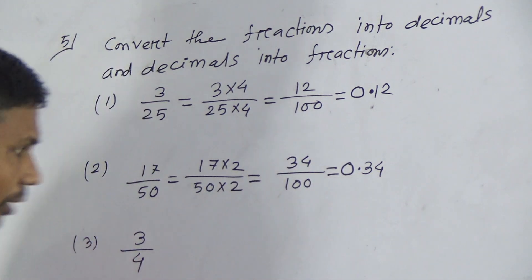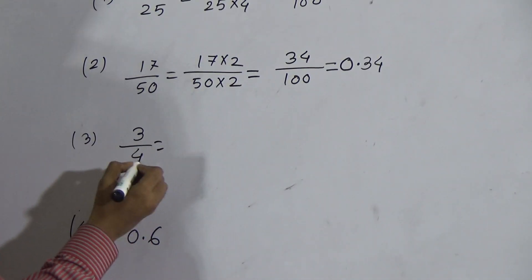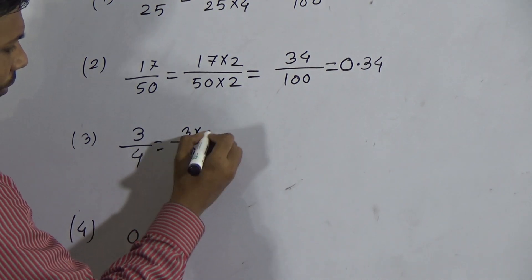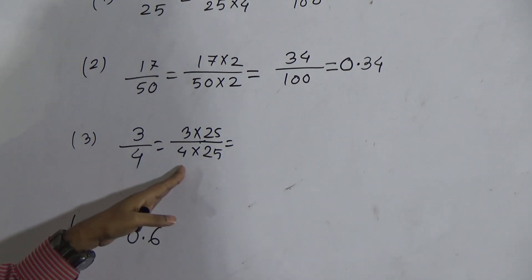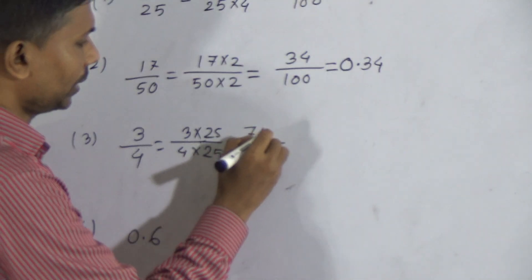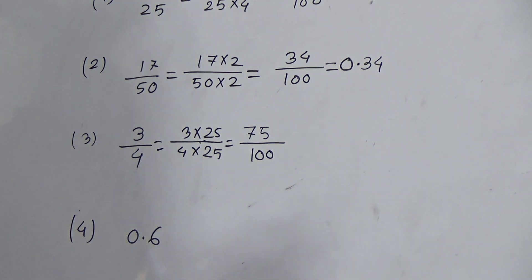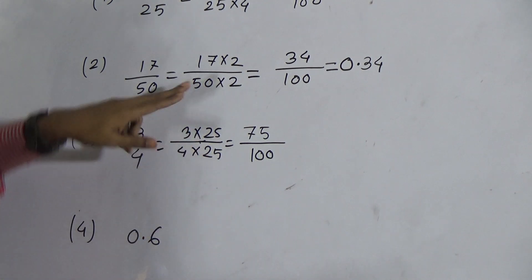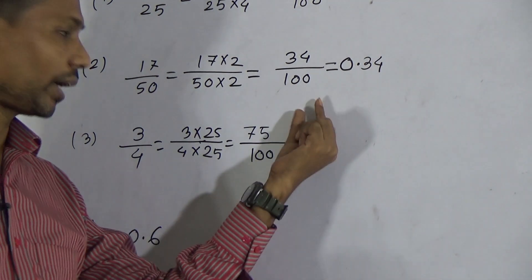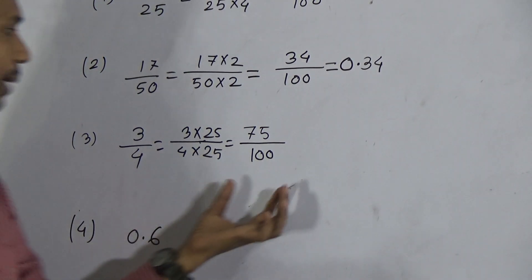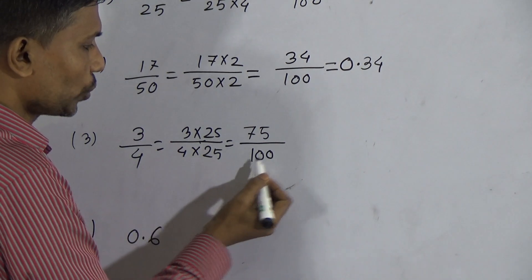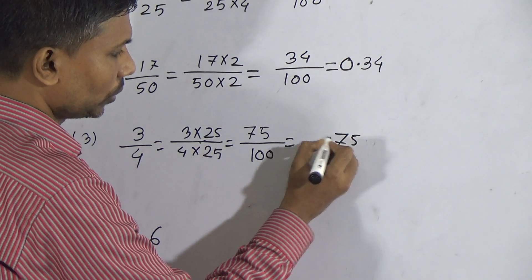Now for 3 by 4, multiply both numerator and denominator by 25. If we multiply 25 with 4 it becomes 100, and 25 into 3 equals 75. I multiplied by 25 because I need the denominator to make 100 — if we make it 100, division is easier. Since 100 has two zeros, write 75 then place the decimal — the result is 0.75.